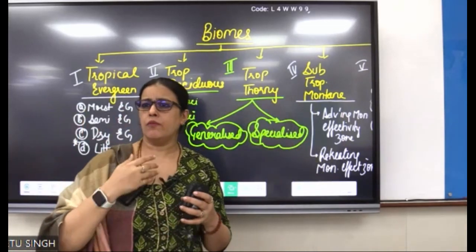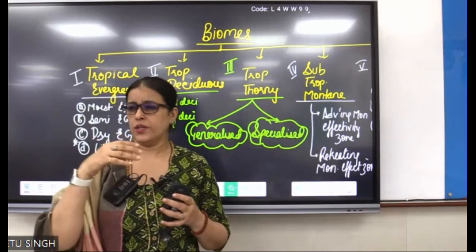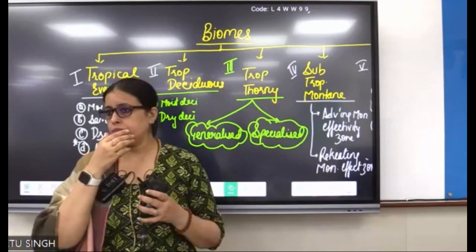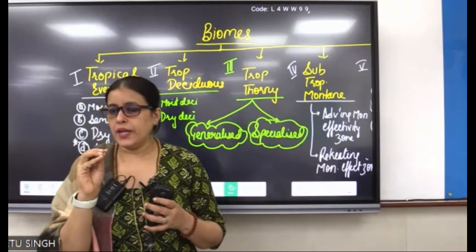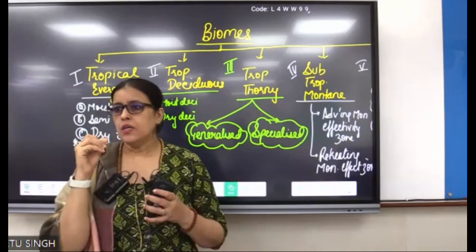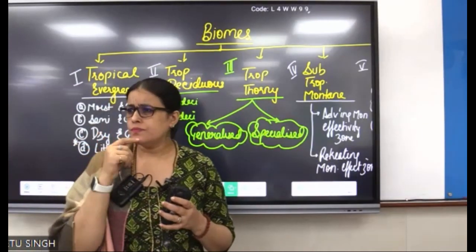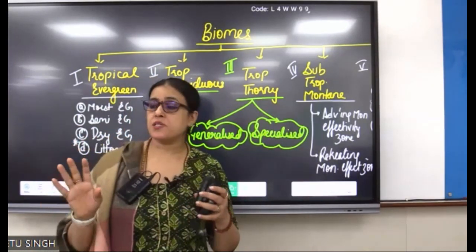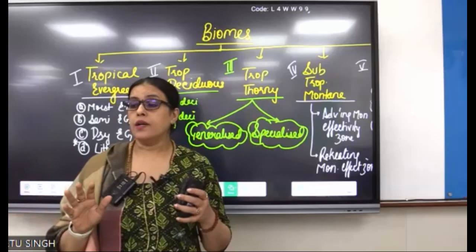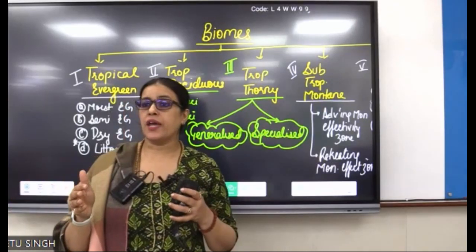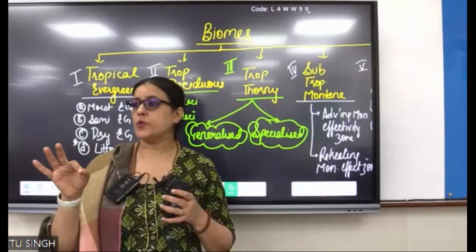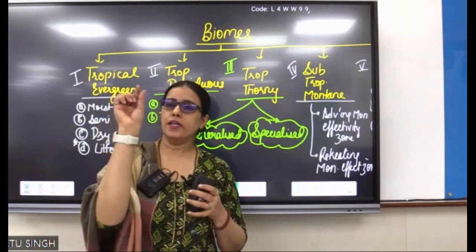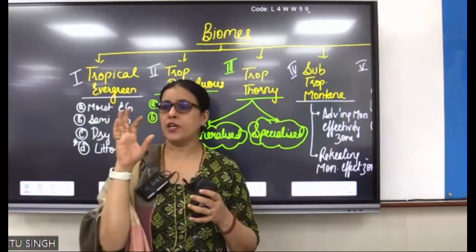Tropical Thorny should be related to Marusthali and Rann. Marusthali is a sandy desert; Rann is salt marshes. In Marusthali, plants are adapted to drier conditions — they have deep roots and needle-shaped leaves so that they can minimize transpirational loss.